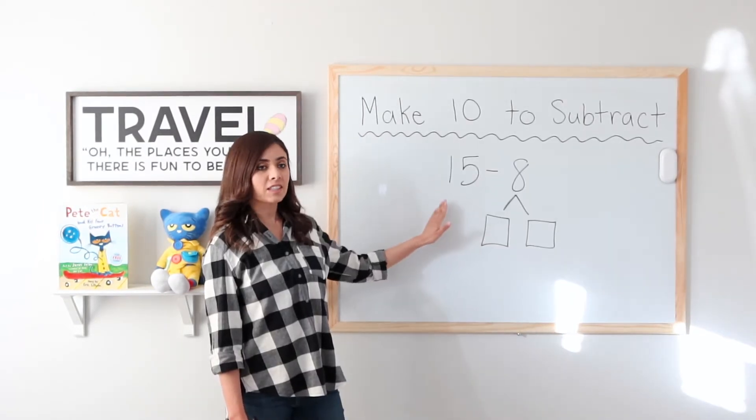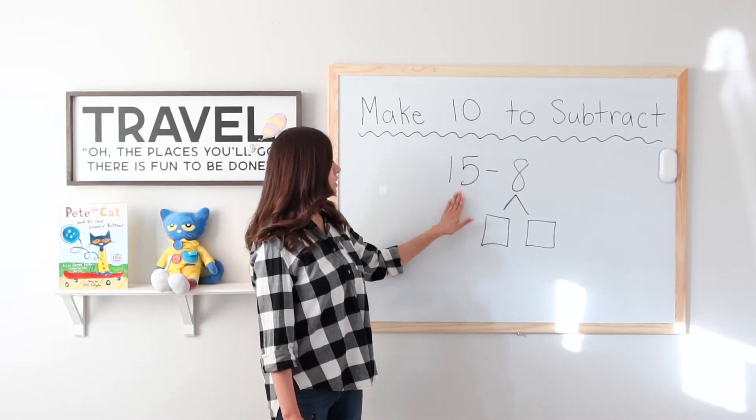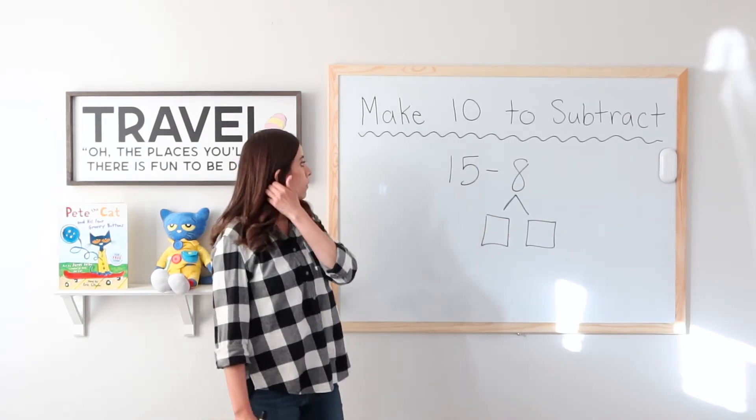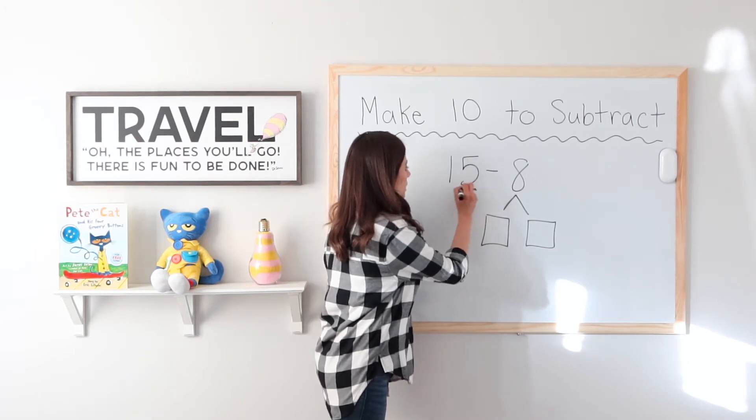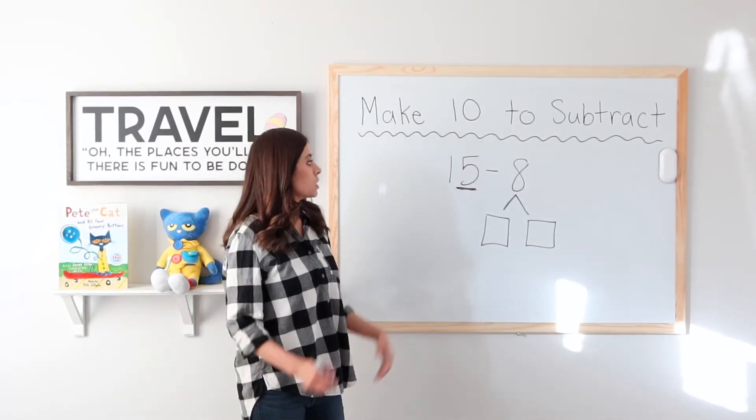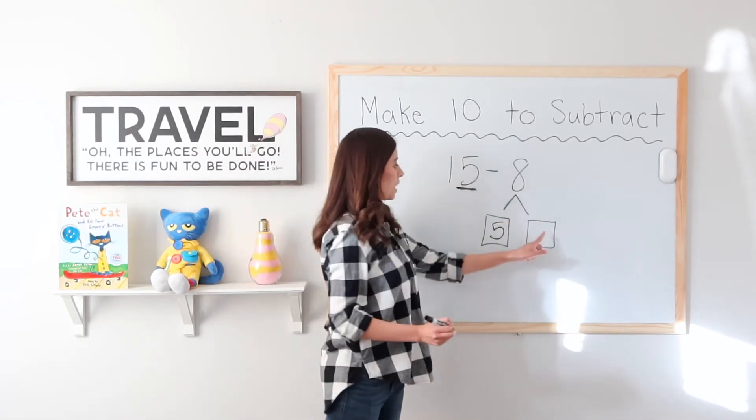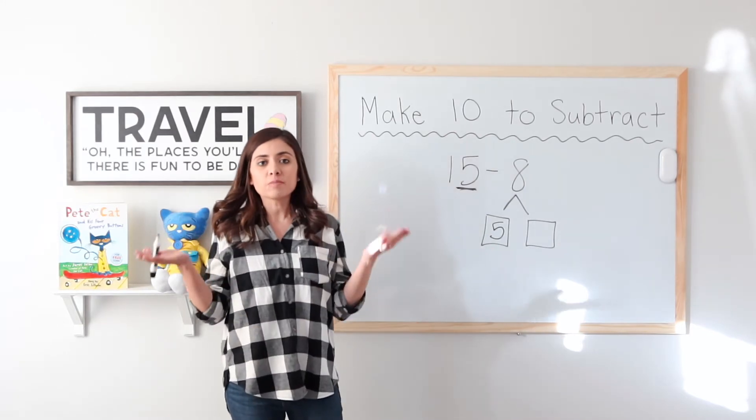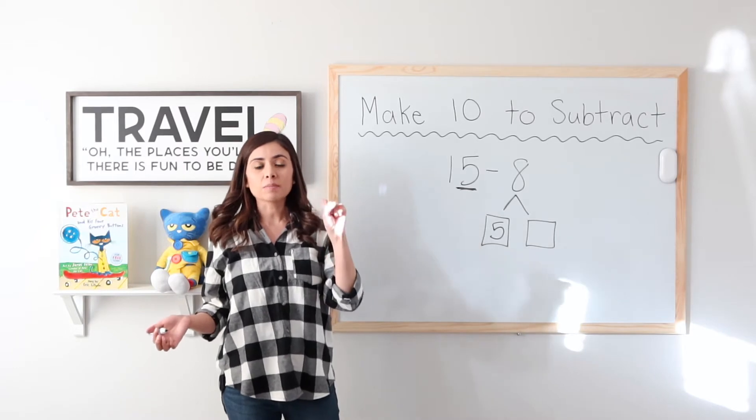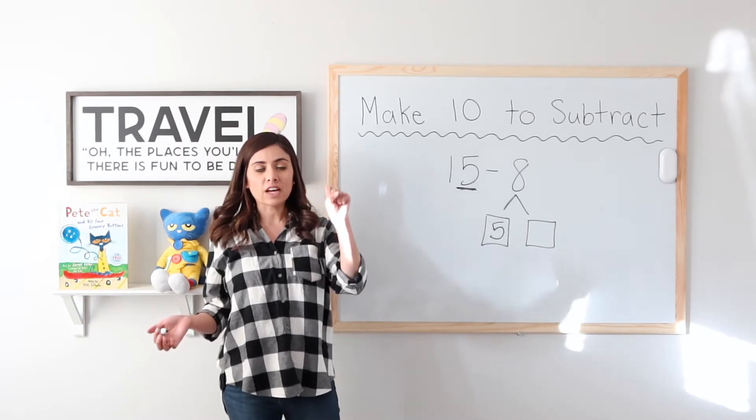15 minus 8. So the first step is to break apart our 8 so that when I do 15 minus the first part, I get 10. We already know that I have to look at this number. 15 minus 5 will give me 10. So of course I want to break up my 8 into 5 and something else. 5 plus what equals 8? Let's hold a fist and say 5 and jump up until we get to 8.